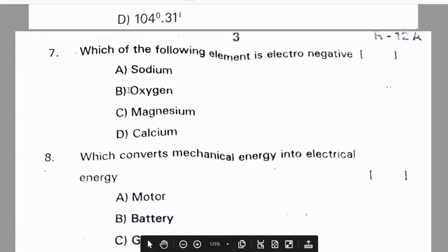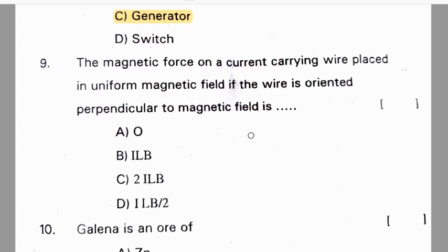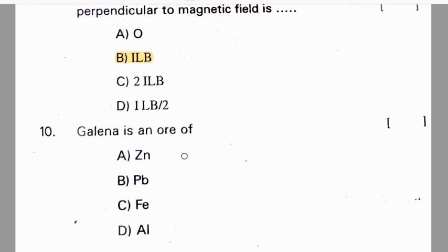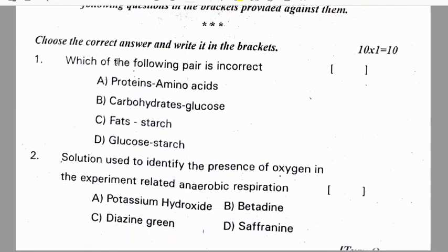Seventh question: which of the following elements is most electronegative — oxygen is electronegative. Eighth question: which device converts mechanical energy into electrical energy — a generator. Ninth question: the magnetic force on a current-carrying wire placed in a uniform magnetic field, where the wire is oriented perpendicular to the field — correct option is B. Tenth question: the symbol for lead is Pb.